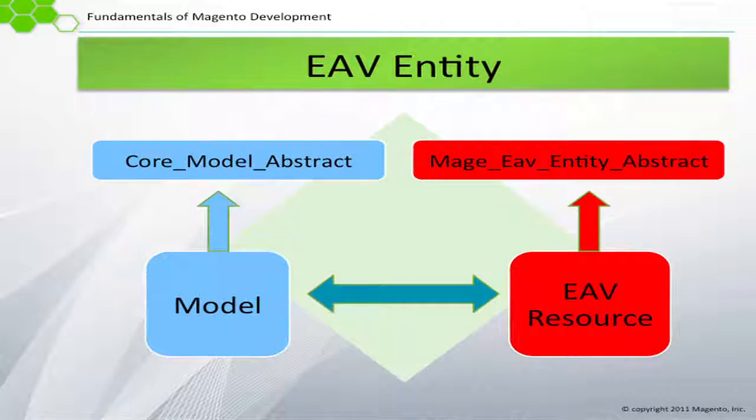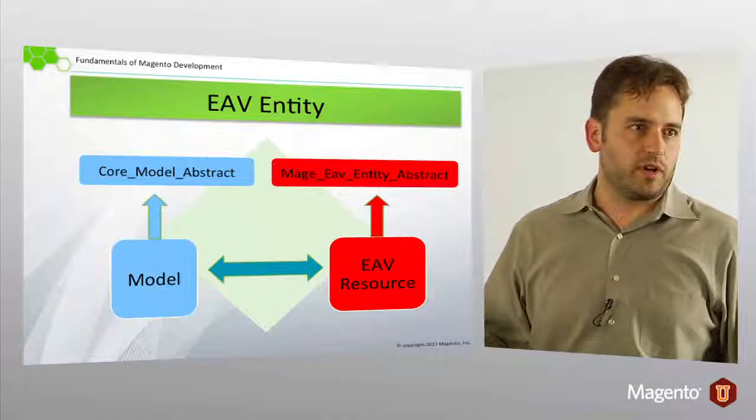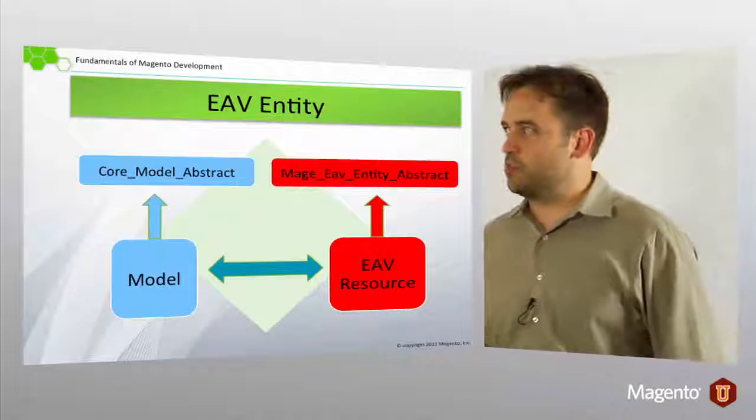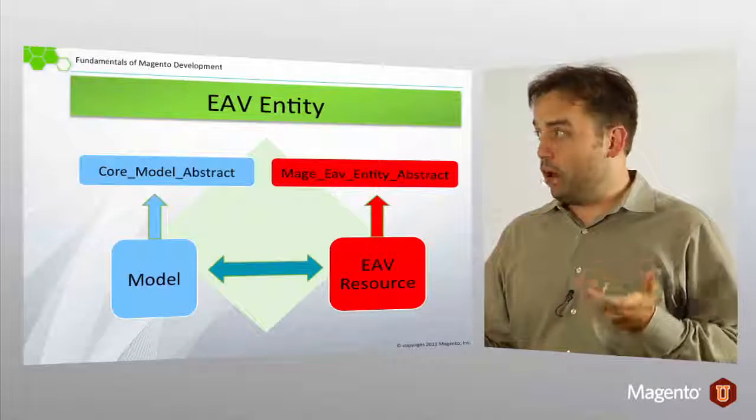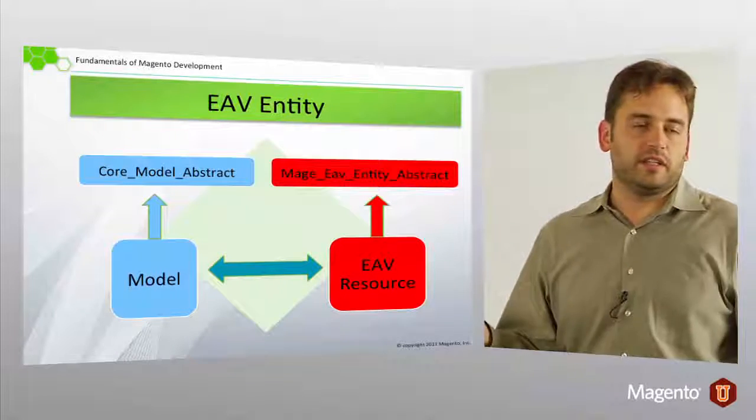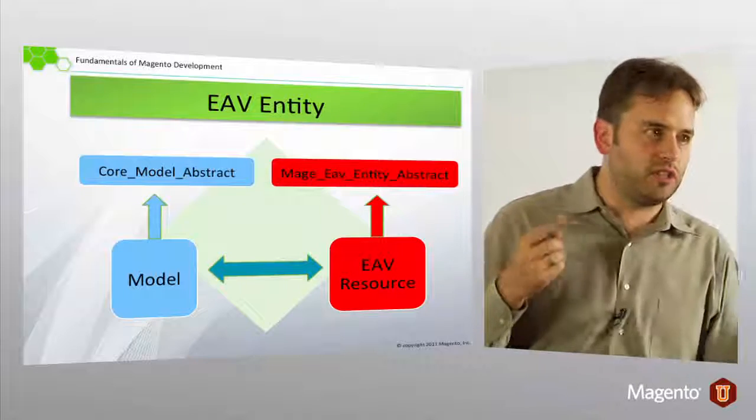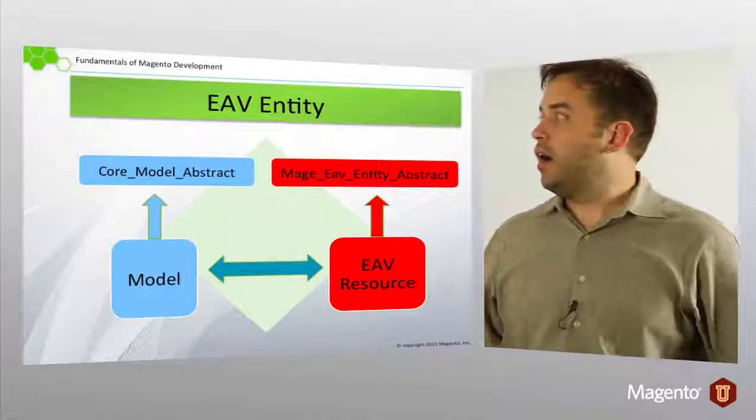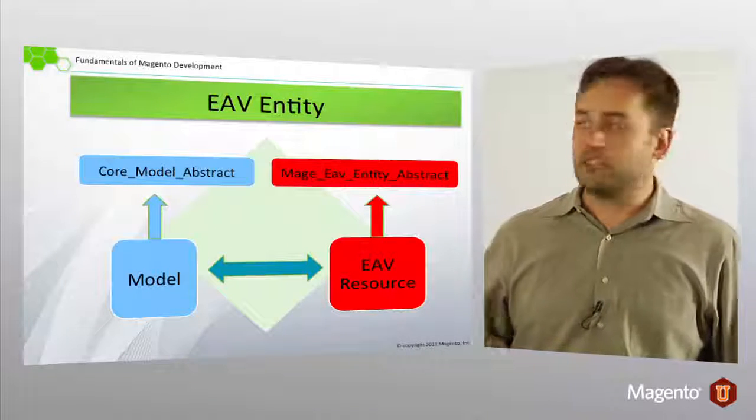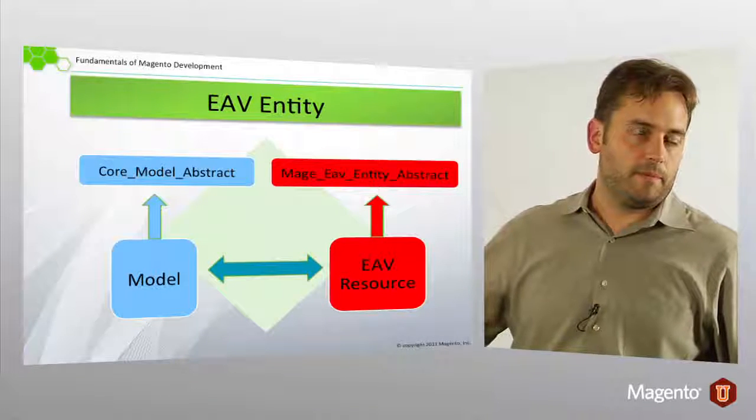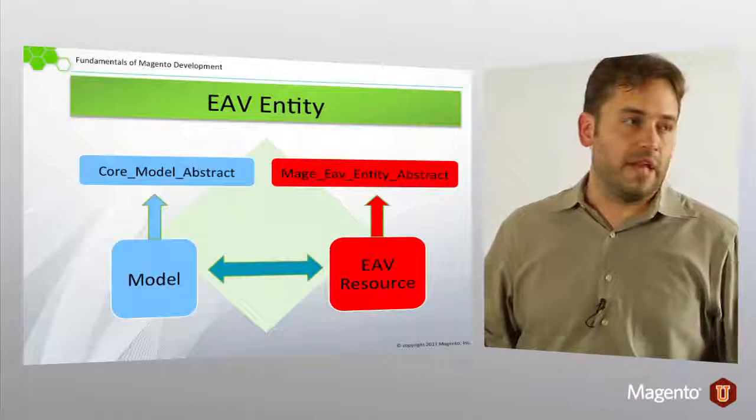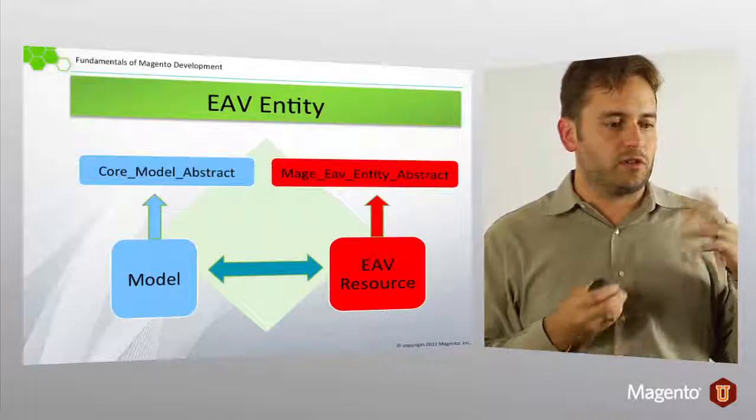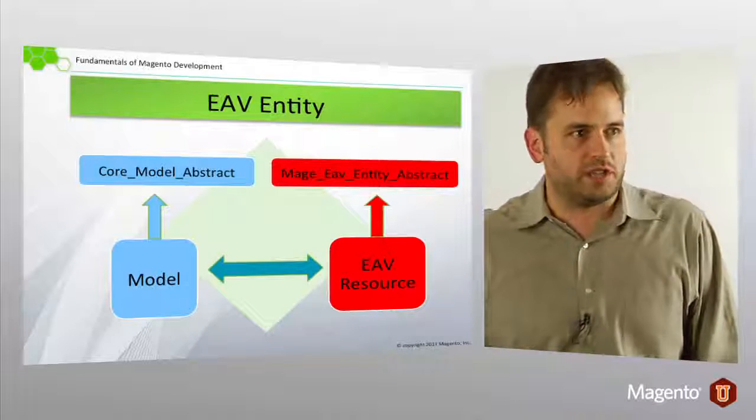So models, EAV entities - the model that we deal with in the front end, something like catalog product, just like a regular simple entity that extends from core model abstract. The difference is the resource model will ultimately extend from Mage EAV entity abstract. In the case of catalog entities, products and categories, there's actually another EAV class which extends from this, and then catalog and product entities extend from that class because there are certain sets of utility methods necessary for those.